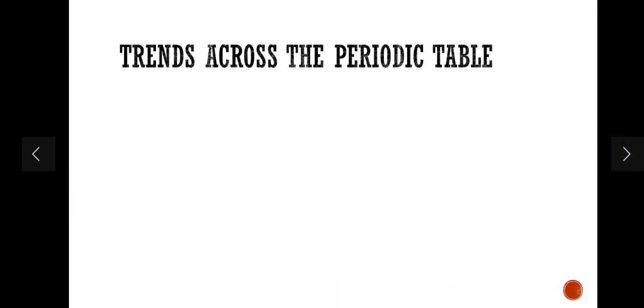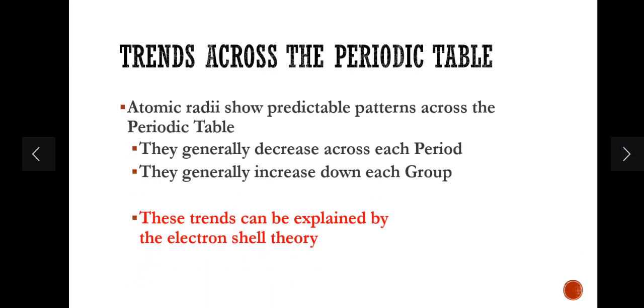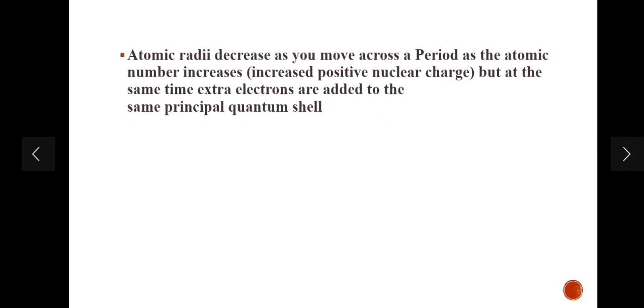Moving on to the trends across the periodic table — atomic radii show predictable patterns across the periodic table. As you move across each period, the atomic radius will generally decrease, and as you move down each group, the atomic radius will generally increase. These trends can be explained by the electron shell theory.